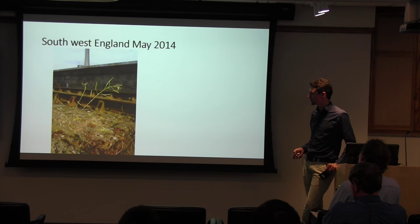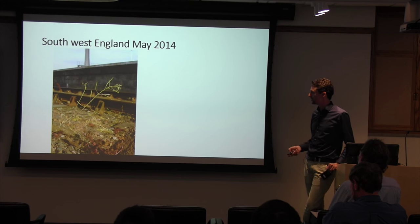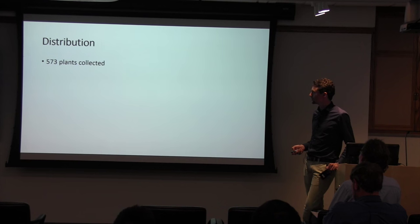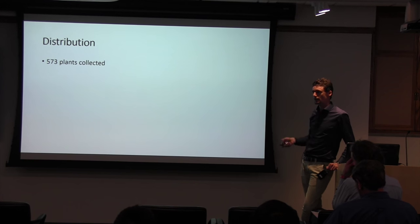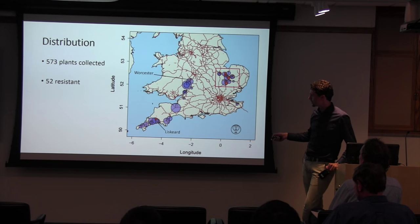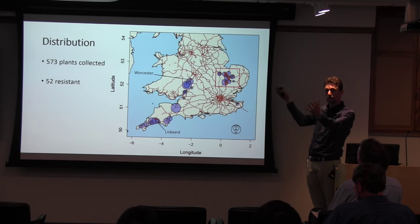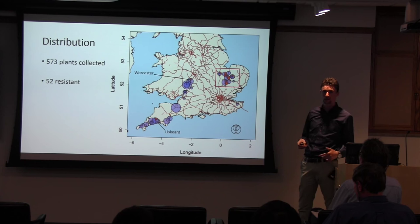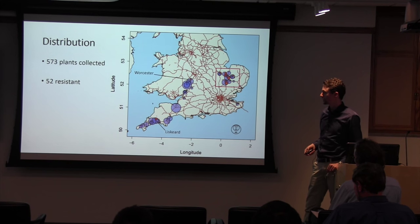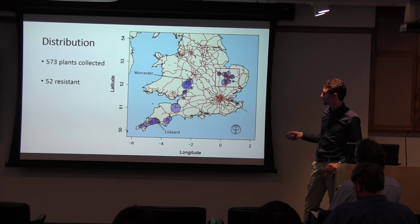We wanted to investigate this further, so we did a sampling strategy around southwest England since we had these two data points pointing us in that direction. We went back again with a lot more sampling along railway tracks. In total, including sampling in the east of England, we had 573 plants collected and 52 resistant plants. In the southwest, apart from the place where they had originally been collected - these four individuals in the panel of 6,000 - we didn't find it back there, as the railway station was being renovated at the time and completely destroyed. But I did find it independently in Worcester. So we know it has spread considerable distances.